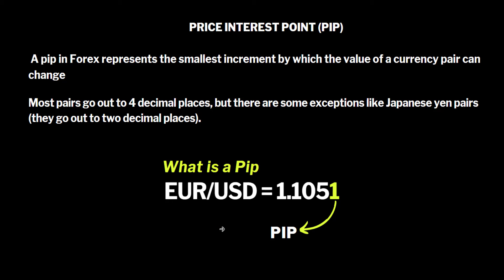The pairs that have USD are called major pairs, and major pairs have four decimal places — one, two, three, four. This means one euro in the market is equivalent to 1.1051 dollars. The smallest difference after the decimal is what gives people money. The fourth digit is known as your pip. Every currency pair that has USD has at least four decimal places, and the last digit is your pip. There are some exceptions, such as the Japanese yen and gold, which have two decimal places.